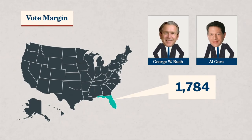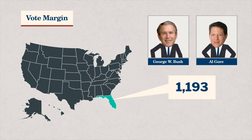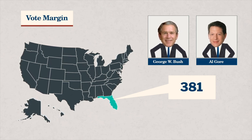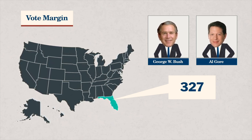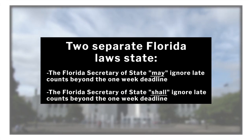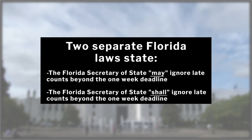Florida law required a statewide machine recount when the margin of victory was one half of one percent or less. During the recount, Bush's lead shrunk to only 327 votes. Gore then demanded that ballots in four heavily Democratic counties be recounted by hand, a recount which Florida law required to be finished in one week. To make matters even more confusing, two conflicting laws stated that the Florida Secretary of State both may and shall ignore late counts beyond the one-week deadline.